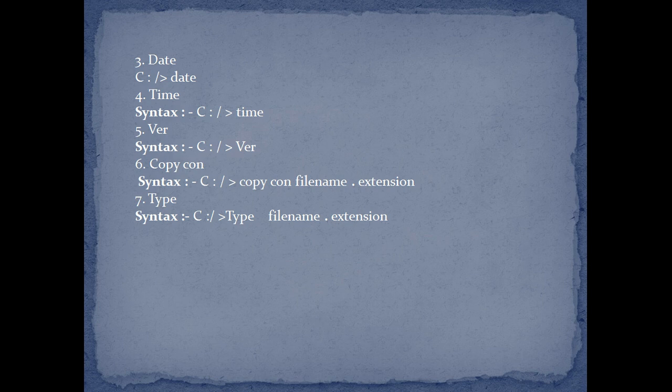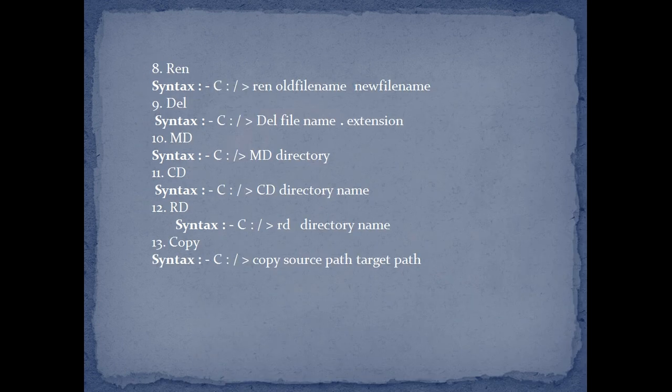The sixth is copycon — copycon command is used for creating files. I will be explaining it practically. The seventh is the type command — type command is used for seeing the contents written in a file using the copycon command. The eighth one is the REN command — used for renaming a file, if you want to give an already created file another name.